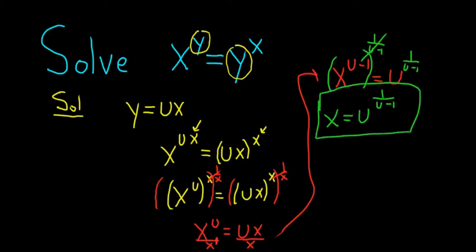So what about y? Well, we know that y is equal to ux. So y is equal to u times u to the 1 minus u. Yeah, u minus 1, sorry. And there's a 1 here. And when you multiply these, you can add the exponents. So this is y equals u to the 1 plus 1 over u minus 1.